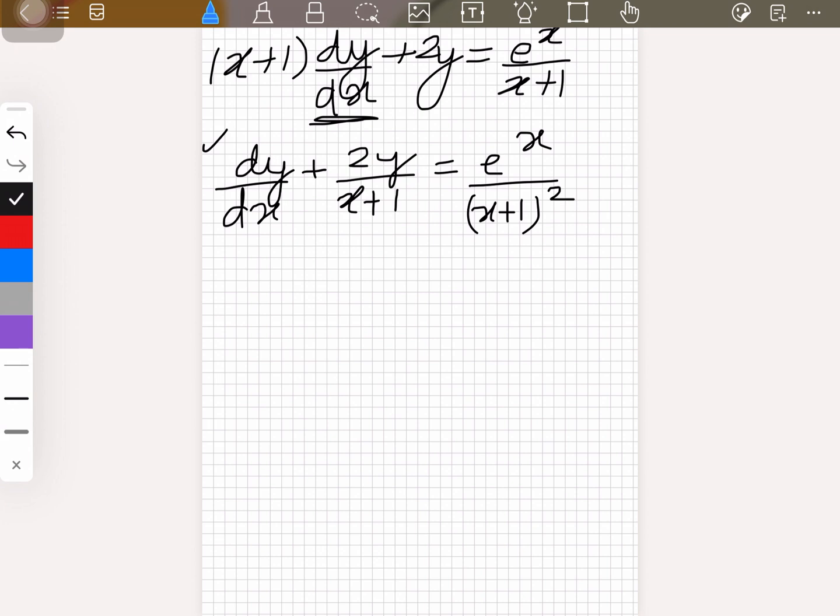Now let's see if we can take this as the standard form. The coefficient of dy/dx is 1, that's good. Here we have a term with y and x, that's good. And here we have terms containing only x. So that's perfect, it is in fact the standard form.